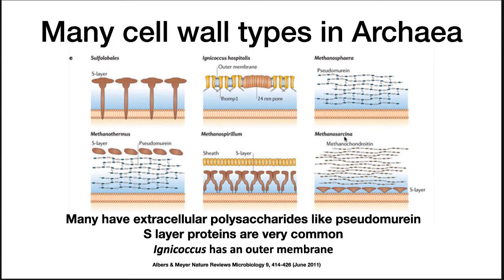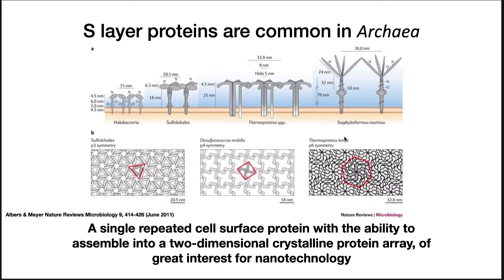Remember that bacteria have two major cell types: gram-positive and gram-negative. In archaea, many diverse cell structures have been found. Some microbes have just a protein surface layer projecting from the cytoplasmic membrane, such as Sulfolobales. Igneococcus has a structure reminiscent of a gram-negative cell wall, while Methanosphera forms structures similar to a gram-positive cell wall, with a thick layer of pseudopeptidoglycan-like molecules outside its cytoplasmic membrane. An S-layer, or surface layer, is very common — formed from a single repeated cell surface protein that assembles into two-dimensional crystalline protein arrays, as seen in this figure. These proteins are of great interest for nanotechnology, since they can be used to build covers for nanomachines.